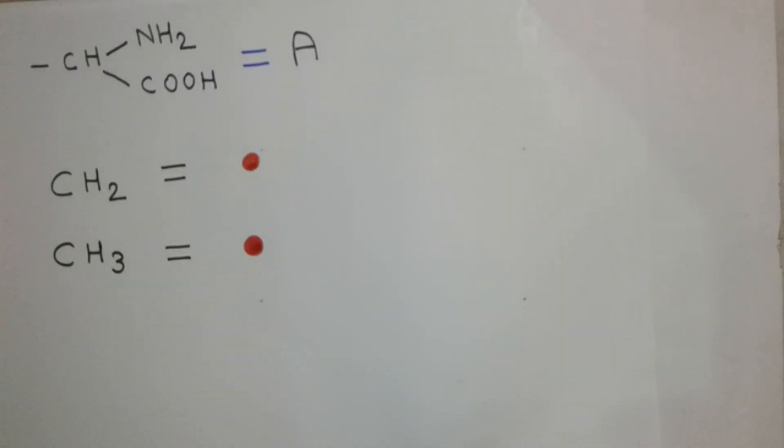So, glycine can be written as A. That is CH2NH2COOH. Alanine can be written as a red dot and A.